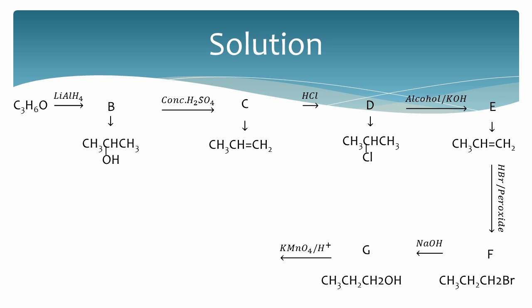G on controlled oxidation using potassium permanganate produces two products. Since 1-propanol is a primary alcohol, the first product of oxidation is an aldehyde, and in this case propanal. Propanal on further oxidation produces an acid, and in this case propanoic acid.